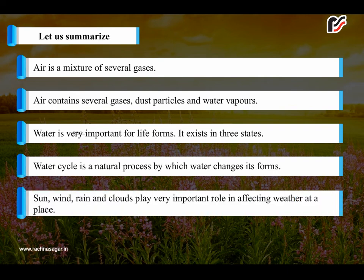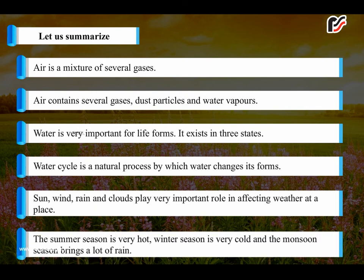Sun, wind, rain and clouds play a very important role in affecting weather at a place. The summer season is very hot, winter season is very cold and the monsoon season brings a lot of rain.